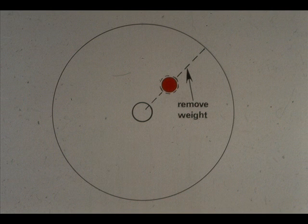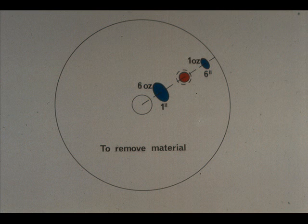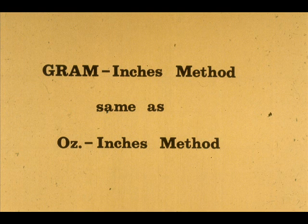On the other hand, the unbalance may also be corrected using the same basic ounce-inch formula, but this time to determine the amount of weight to be removed on the same radial line as the heavy spot. We could remove six ounces at one inch radius, or remove one ounce at six inches. You'll learn through experience how to make the decision on whether to add a counterweight or to remove material. You may also find that your plant measures unbalance with gram-inches instead of ounce-inches. Your instructor will tell you more about your procedures in this area. The method would be identical; the only difference being that you would use grams instead of ounces.